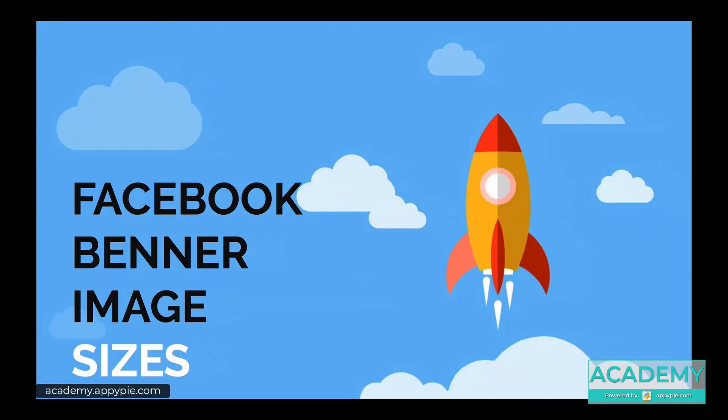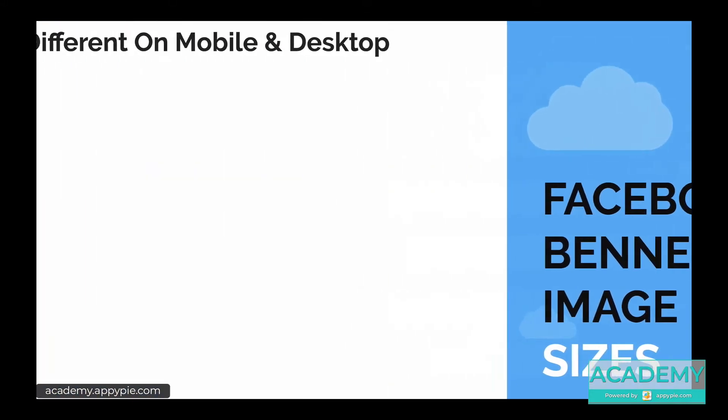There are different Facebook banner image sizes because some people will look at your page on mobile, some on desktop, and all of them will have different screen sizes. Facebook adjusts the dimensions depending on the size of the screen of the device.